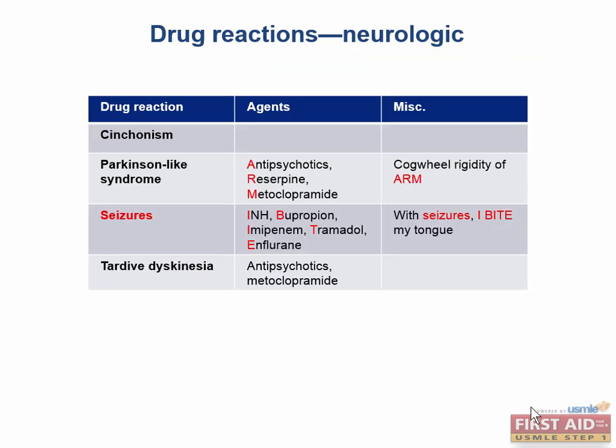Let's talk about another clinical scenario. A patient comes to your clinic with hearing loss, a ringing in their ears, and blurred vision. Through their history, you find out they have a cardiac condition being treated with quinidine. What condition is responsible for the hearing loss, tinnitus, and blurred vision? This trio is traditionally associated with cinchonism, which is due to an overdose of quinine or quinidine. Typically, switching drugs will get rid of these symptoms.